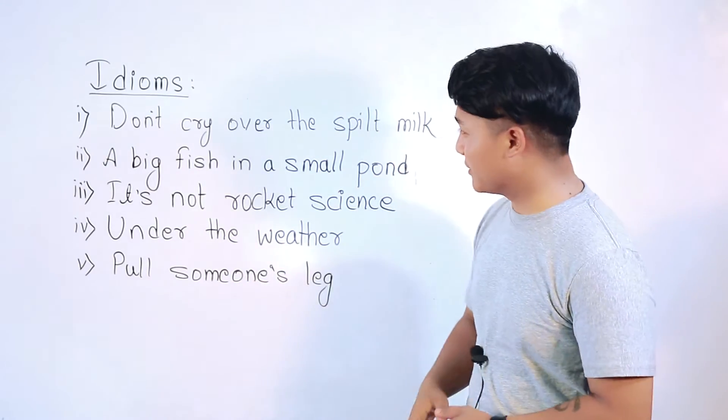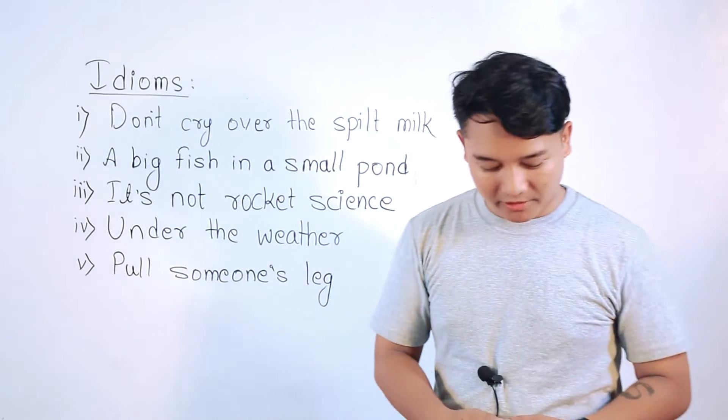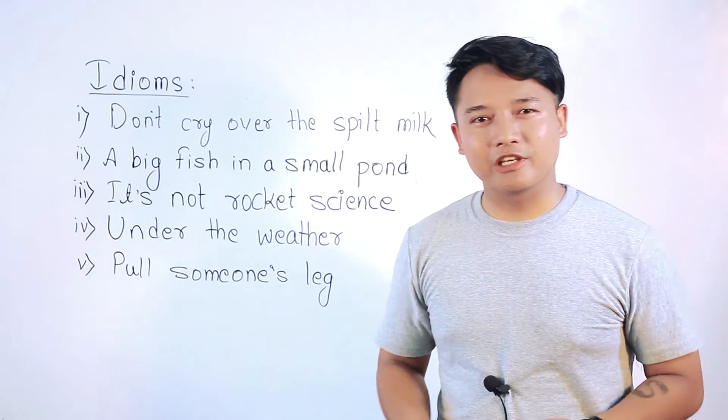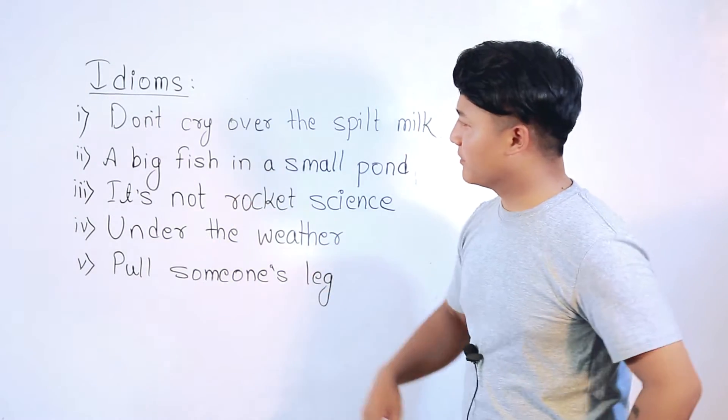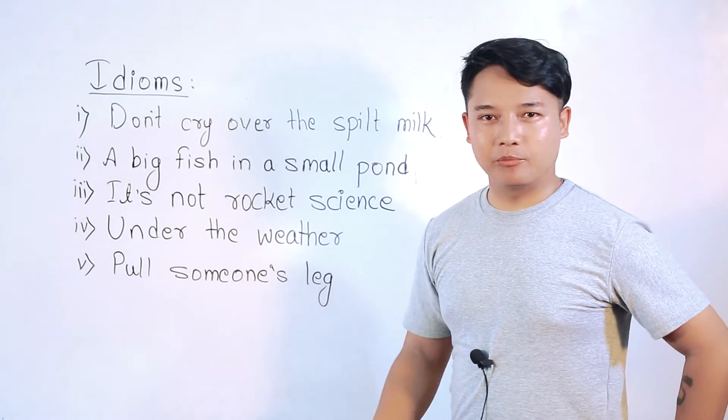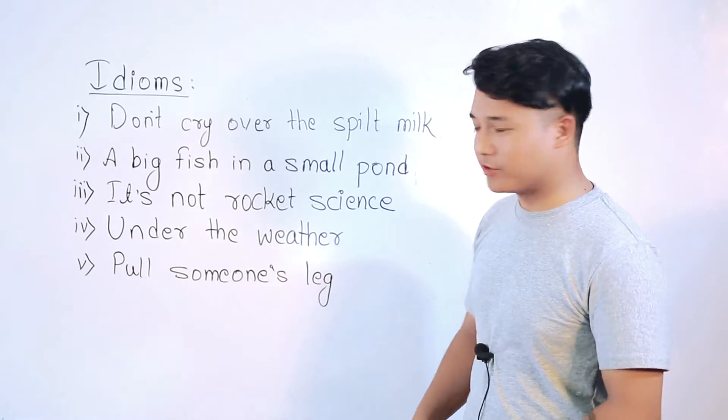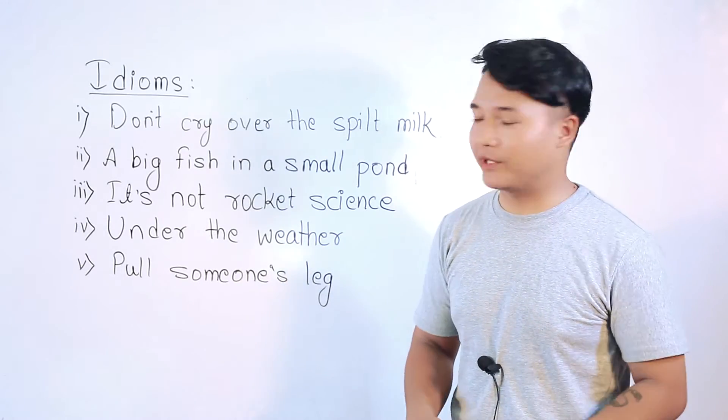So let's look at the very first idiom. It says don't cry over the spilt milk. It simply tries to convey the message that it is what it is. It means to say that whatever has happened, let it happen because you have got no control over it. So don't cry over the spilt milk because you're not going to collect the milk once again back in your bowl.